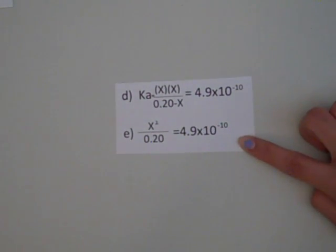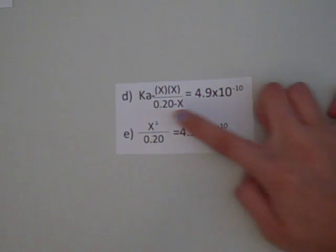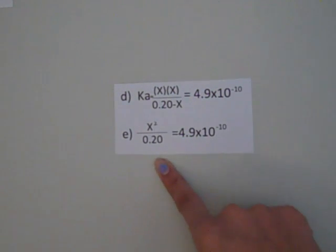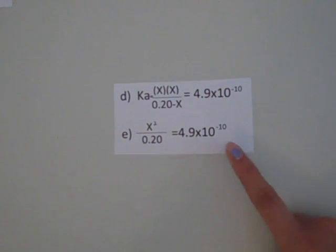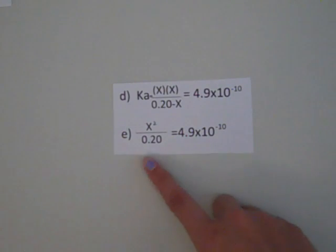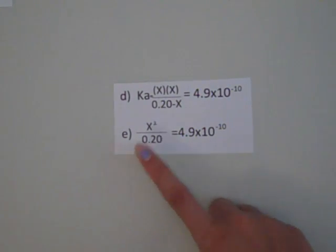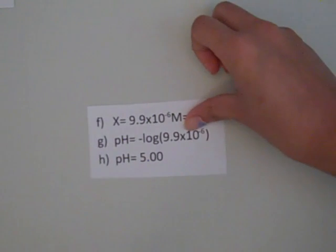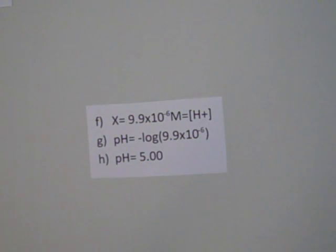So 4.9 times 10 to the negative 10th equals X squared over 0.20. Multiplying 4.9 times 10 to the negative 10th by 0.20 and taking the square root, we find that X equals 9.9 times 10 to the negative 6 molar.